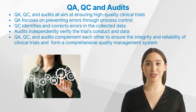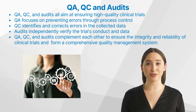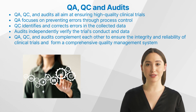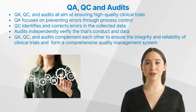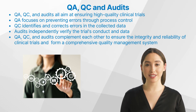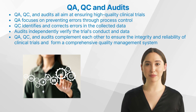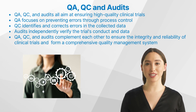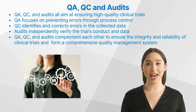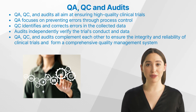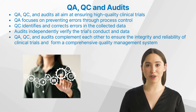What are the differences between quality assurance, quality control, and audits in clinical trials? While they all aim at ensuring high-quality clinical trials, their methods, goals, and outcomes differ. Quality assurance focuses on preventing errors through process control. Quality control identifies and corrects errors in the collected data. Audits independently verify the trial's conduct and data. For instance, suppose a patient's blood pressure is recorded incorrectly due to a faulty device. Quality assurance would have prevented this error by ensuring the device was correctly calibrated before use. Quality control would identify this error when cross-checking the patient's data. An audit would independently confirm this error during its examination of the trial's conduct and data.